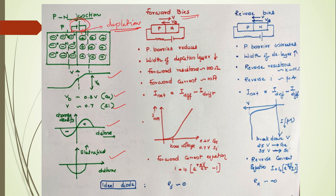Biasing is the process of applying potential difference across a p-n junction. In forward biasing, p-type is connected to positive polarity and n-type to negative. In reverse biasing, p-type is connected to negative and n-type to positive. In forward bias, majority carriers are given importance; in reverse bias, minority carriers dominate. In forward bias the applied potential opposes the barrier, reducing the potential barrier and decreasing the width of the depletion layer.